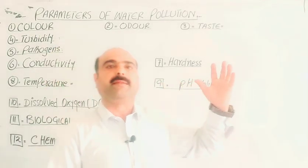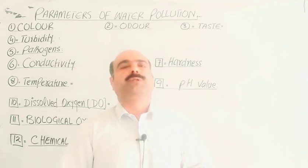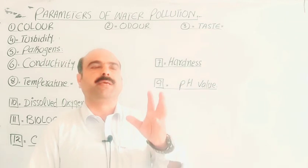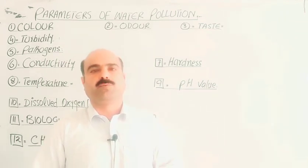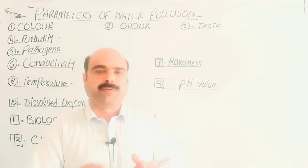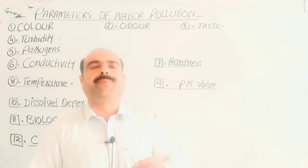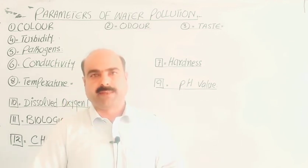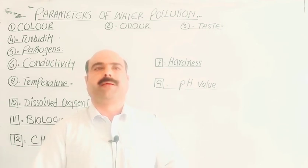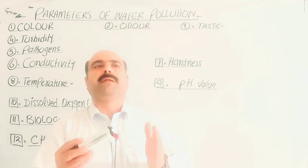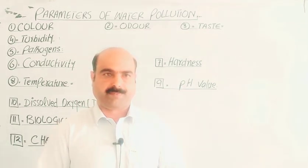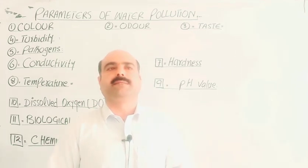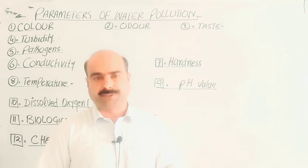The first parameter is color. Pure water must be colorless. Second, it must be odorless. Third, it must be tasteless. Fourth, it must be free from turbidity-causing agents like suspended solids, dissolved solids, chlorides, sulfates, and phosphates. Turbidity must not exceed 10 ppm — up to 10 ppm is acceptable. Pure water must also be free from disease-causing bacteria, i.e., pathogens and germs.